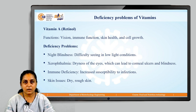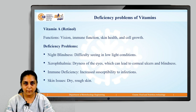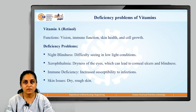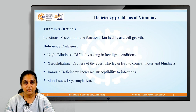Let us have a look at the deficiency problems of vitamins one by one. Let us begin with vitamin A, which is also known as retinol. The functions of vitamin A, which we had already seen, are: it helps in our visionary actions, in immune functions, it helps in cell growth, and also in promoting skin health for the betterment of the skin.